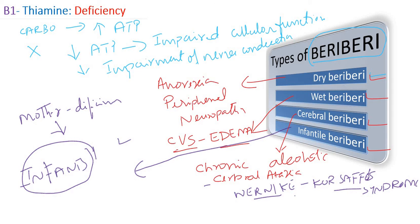In summary, thiamine deficiency leads to a disease called beriberi. Due to low ATP and improper nervous system function, patients have anorexia, weakness, peripheral neuropathy, and neuritis. Wet beriberi involves the cardiovascular system with edema; dry beriberi involves the peripheral nervous system without edema; cerebral beriberi involves the central nervous system in chronic alcoholics; and infantile beriberi occurs in newborns of thiamine-deficient mothers. Thanks for watching.